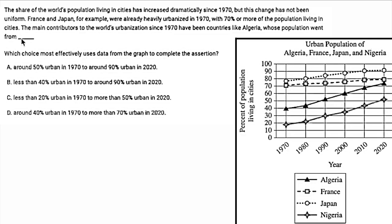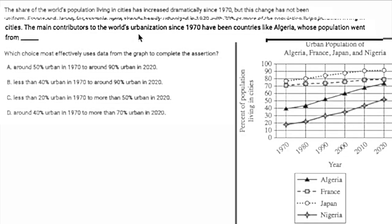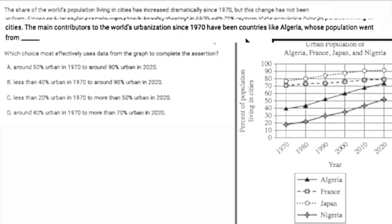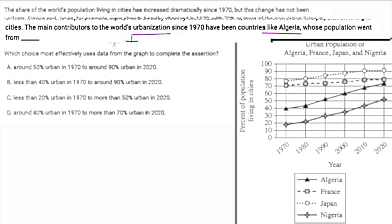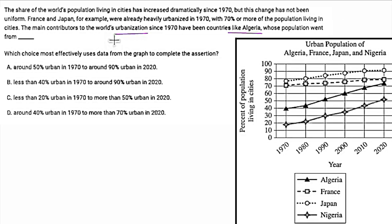Let's see what's going on here. I'm going to start backwards from the blank space again. We've got 'main contributors to the world's urbanization since 1970 have been countries like Algeria, whose population went from blank.' So this one's a little bit different — it's more of a statement than an example. It's saying urbanization, countries like Algeria, whose population went. So I know I should be focusing on Algeria, and I'm looking specifically for urbanization — some sort of population growth in urban areas.